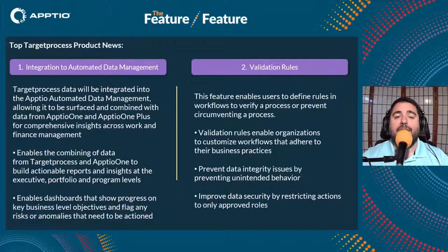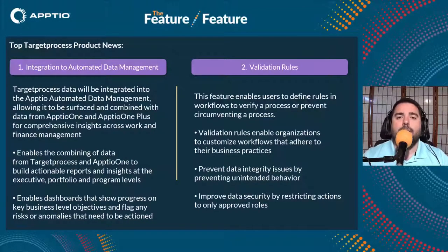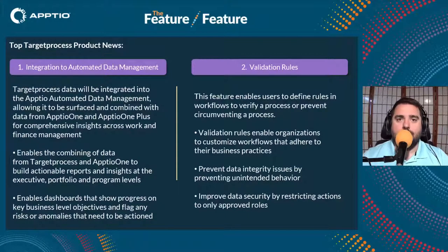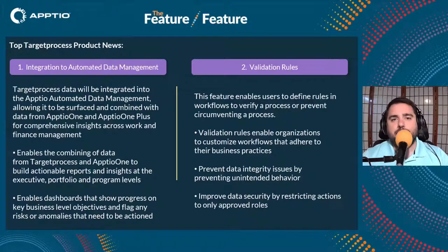This integration enables your dashboards to show progress on key business-level objectives and flag any risks or anomalies that need to be actioned. It also incorporates data from Target Process and Aptio One with other data sets in our product suite via Aptio BI, making it easier and easier to surface, correlate, and do side-by-side comparisons of data, as well as distribute that data easily to the people who need to see it within the organization, regardless of their role.